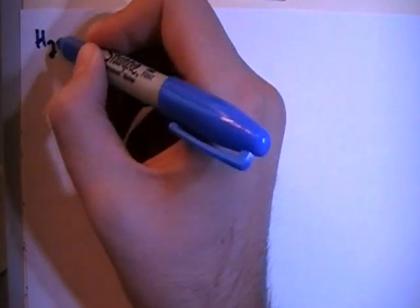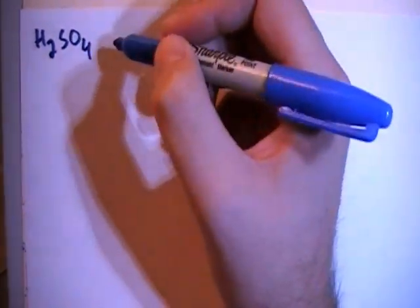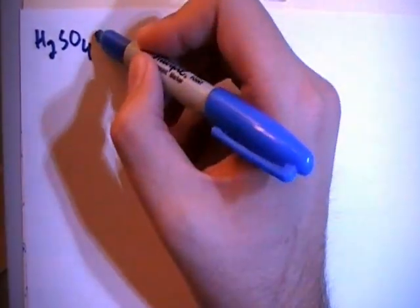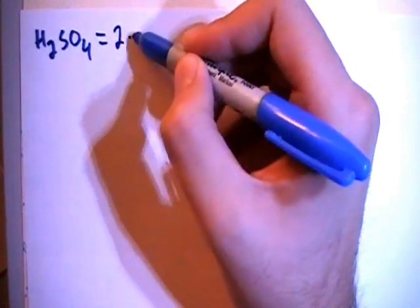Hey guys, in this video I'm going to show you how to draw the Lewis dot structure for sulfuric acid. So here we go, you've got H2SO4 for sulfuric acid. That's going to give us two hydrogens, each with one electron.